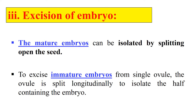The next step is excision of the embryo. After artificial pollination of freshly opened flowers, which is necessary for embryo formation, these embryos are isolated by splitting open the seed. In the case of mature embryo, we split open the seed to get the mature embryo. For immature embryo, we take a single ovule and split it longitudinally to isolate the half containing the embryo.